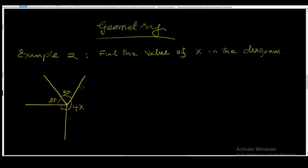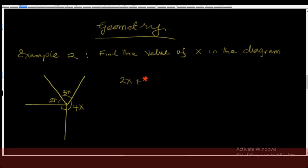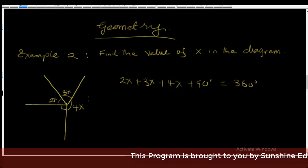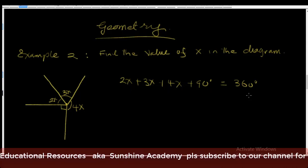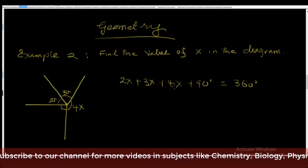Example two says: find the value of x in the diagram. From what I can see, this involves angles at a point, which add up to 360 degrees. We have angles 2x, 3x, 4x, and a right angle of 90 degrees. So 2x plus 3x plus 4x plus 90 equals 360 degrees.